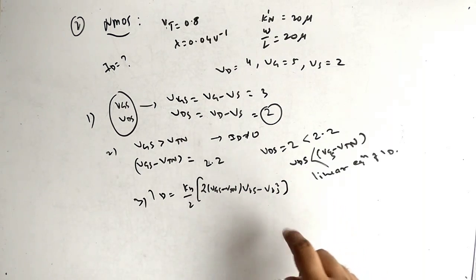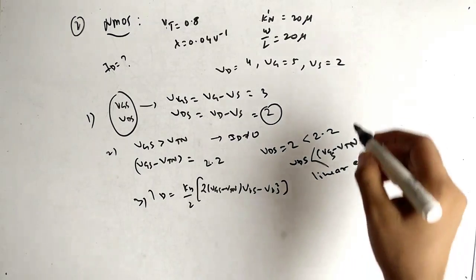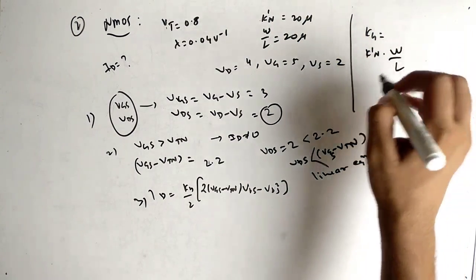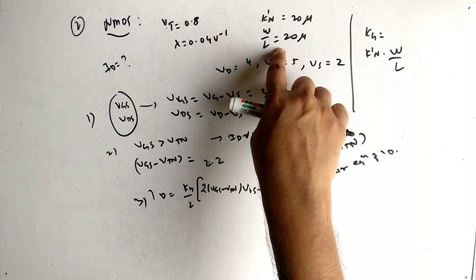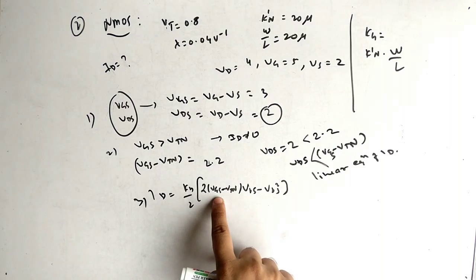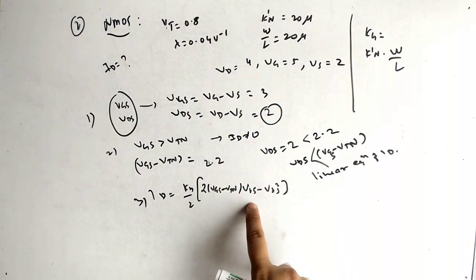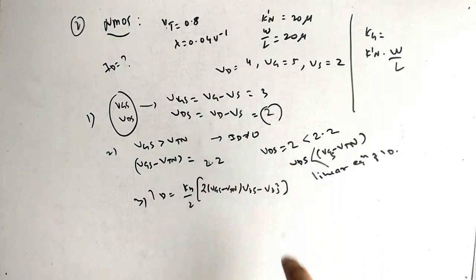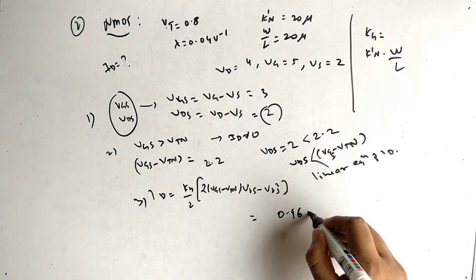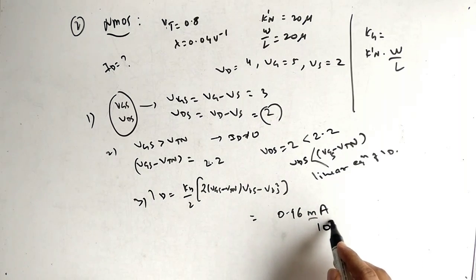ID = (KN/2) × [2(VGS − VTN)·VDS − VDS²]. KN = K'N × (W/L) — both are given, so multiply them. With VGS = 3 V, VTN = 0.8 V, and VDS = 2 V, substituting gives ID = 0.96 mA.